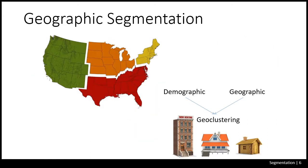Looking at geographic segmentation, there are differences based on many aspects. For example, here in Idaho we sell more snowmobiles and snowblowers than in Florida. But in Florida and the South, we'll probably sell more fishing and hunting supplies than in Los Angeles or Chicago. Similarly, a pickup truck is going to sell better in a rural area than in an urban area.